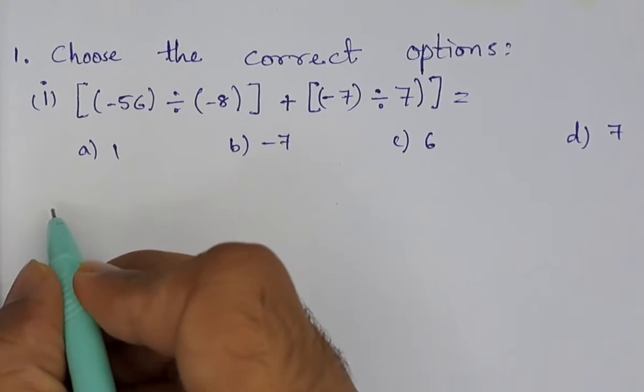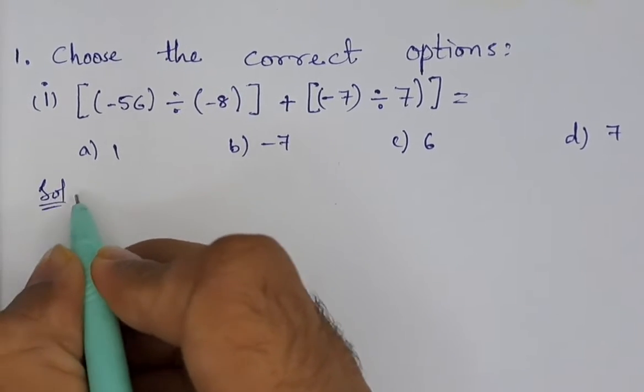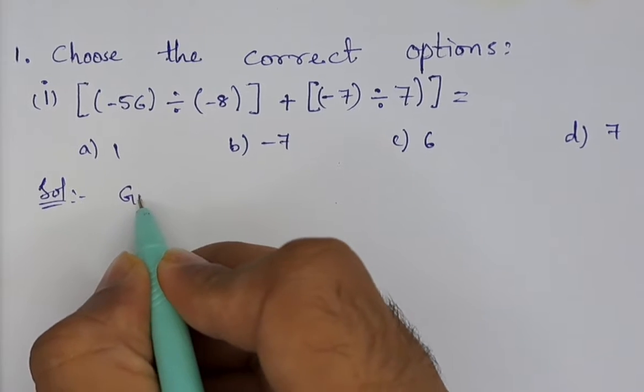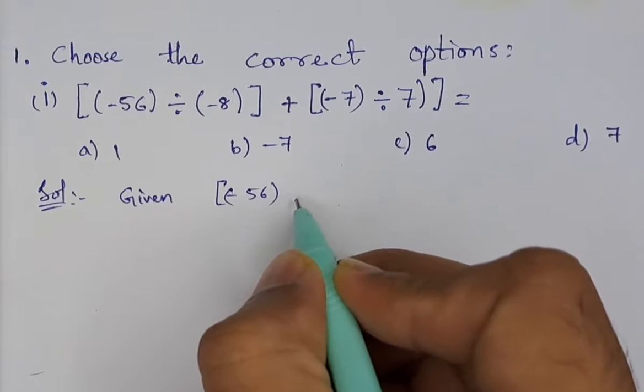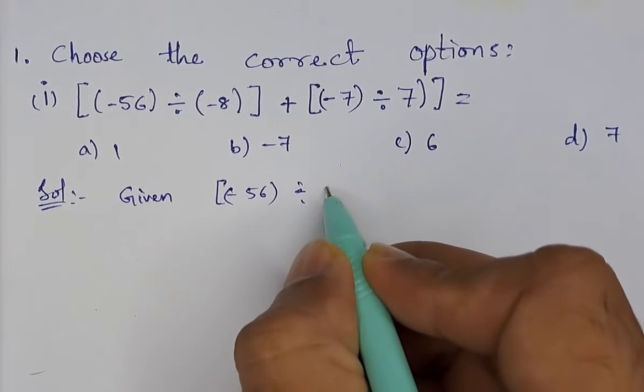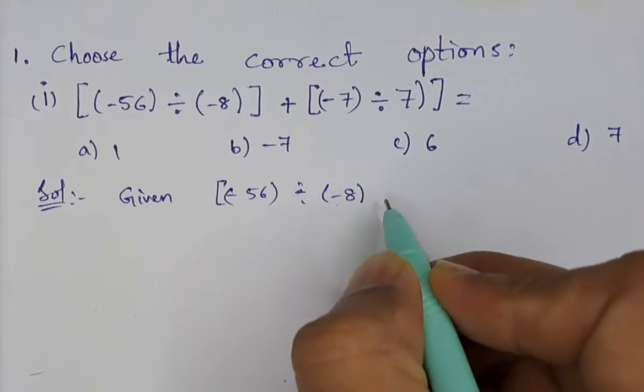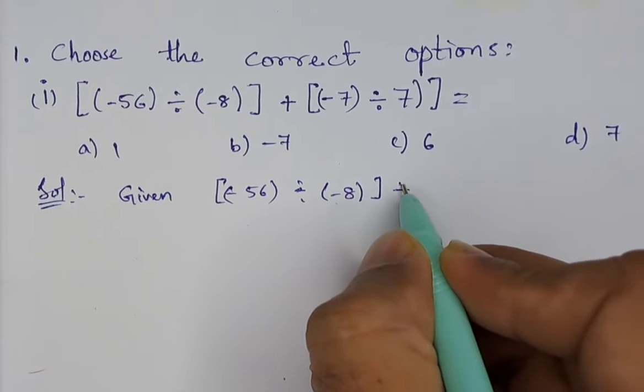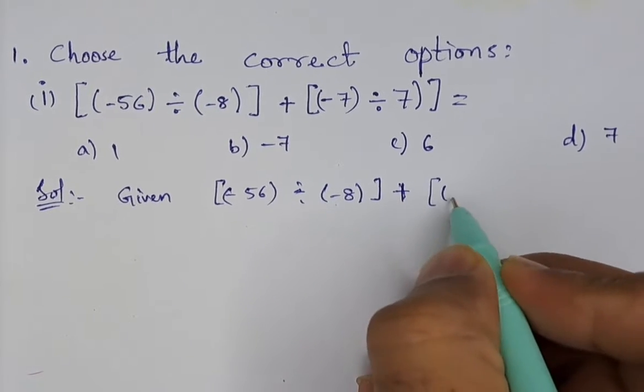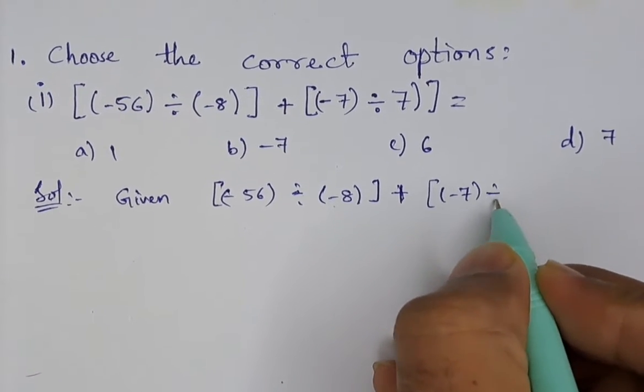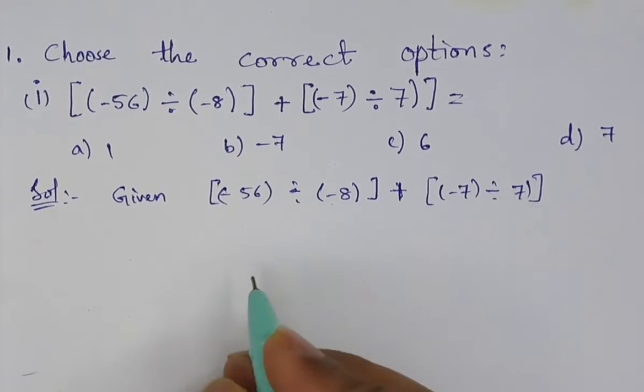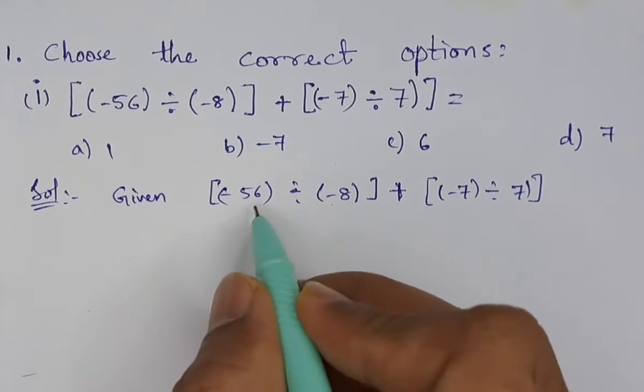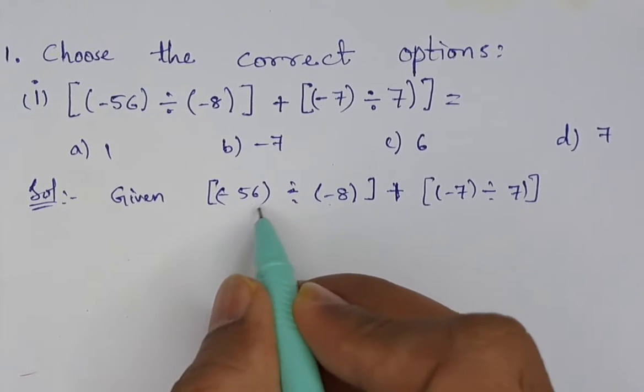First, we will write what is given: [(-56) ÷ (-8)] + [(-7) ÷ 7]. Now let us solve this. We will do what is inside the brackets first.